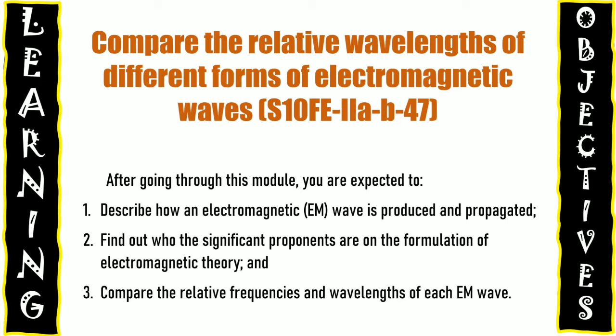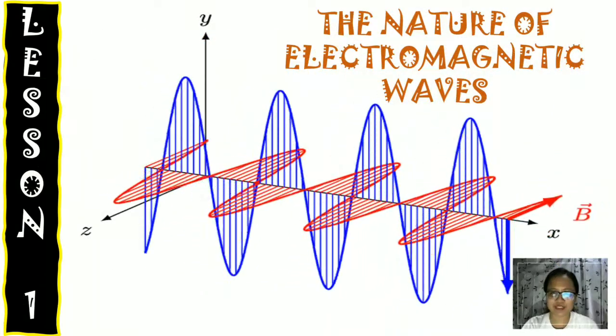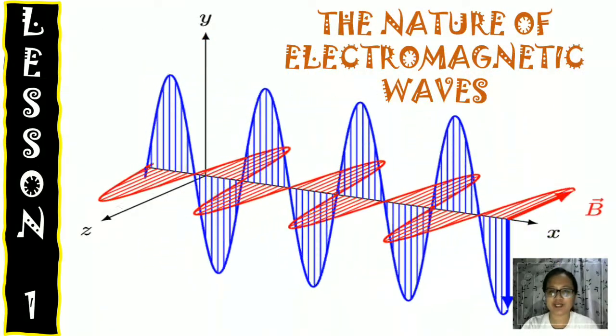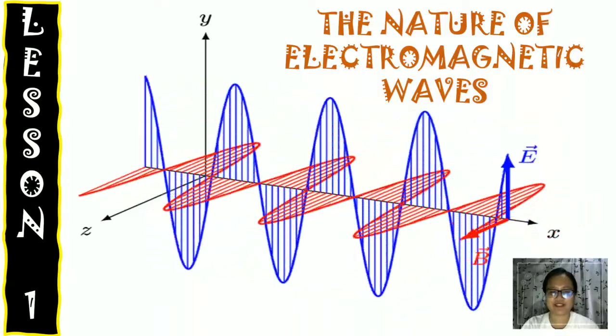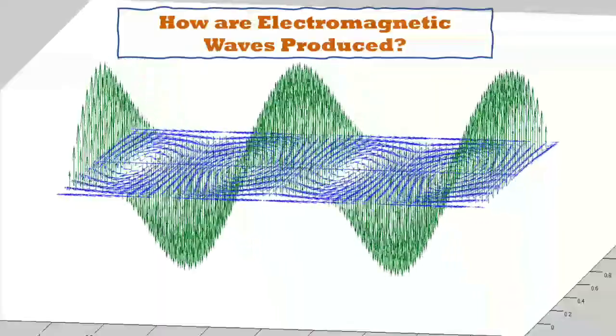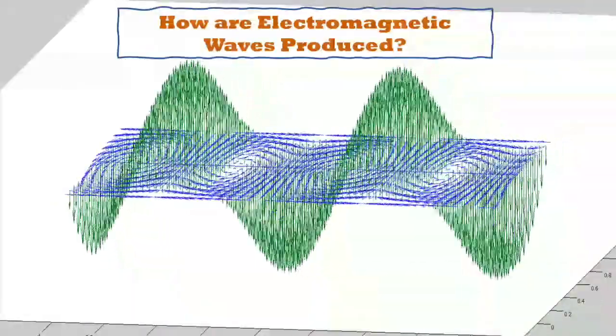This module is divided into 3 lessons. So let's have now lesson 1, which is the nature of electromagnetic waves. How are electromagnetic waves produced?